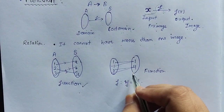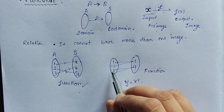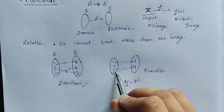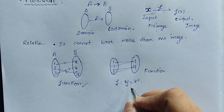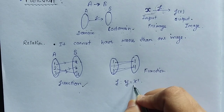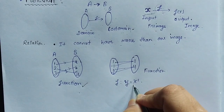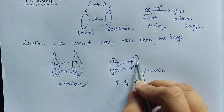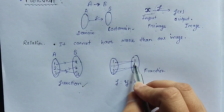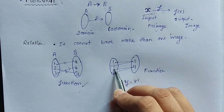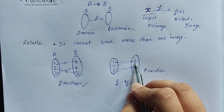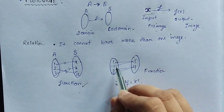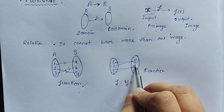Now the second example: the domain has 1, -1, 2, -2, which is the function y = x². Here each and every element has a unique image. 1 has the image 1, and -1 also has the image 1. Both map to the same value, but both have their own unique image, so it is still a function.